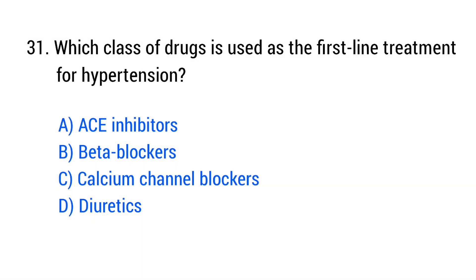Question No. 31. Which class of drugs is used as the first-line treatment for hypertension? The right answer is Option A: ACE inhibitors.